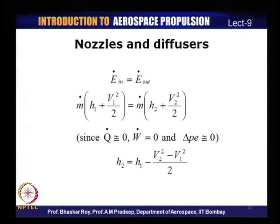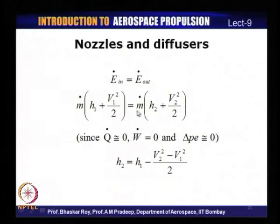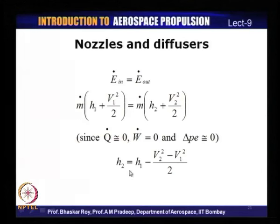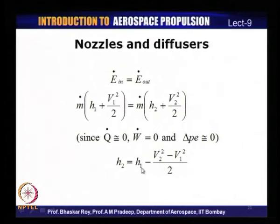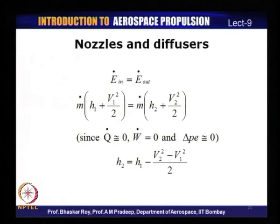Applying these boundary conditions — zero heat transfer, zero work done, zero change in potential energy — the energy equation reduces to: M_dot times (H1 plus V1²/2) equals M_dot times (H2 plus V2²/2). Since mass in equals mass out, M_dot cancels, giving H2 equals H1 minus (V2² minus V1²)/2, or equivalently, delta H equals delta KE. The net change in enthalpy equals the net change in kinetic energy, with no heat transfer and no work done.